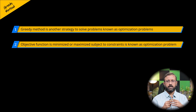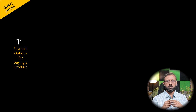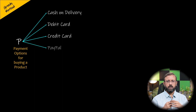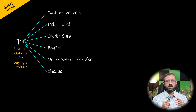Let us look at an example. Consider a problem P: payment options for buying a product online. There may be several solutions for making payments — for example, cash on delivery, using a debit card or credit card, using PayPal, online bank transfer, or making payments by check. These are all the solutions available for making a payment.